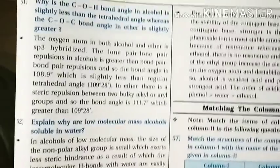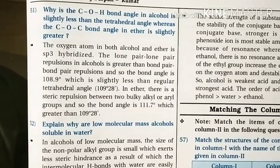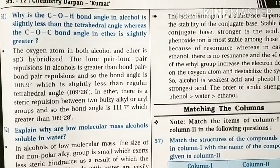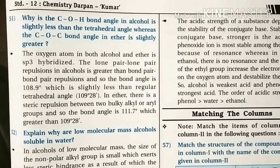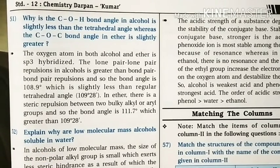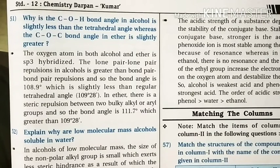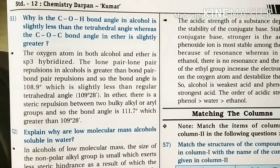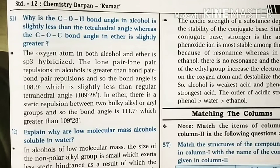Question 51: Why is the COH bond angle in alcohol slightly less than the tetrahedral angle, while the COC bond angle in ether is slightly greater? Oxygen in both alcohol and ether is sp3 hybridized. Due to greater lone pair–lone pair repulsion (VSEPR concept), the COH bond angle in alcohol is slightly less than 109°28'. In ether, the COC bond angle is slightly greater than the tetrahedral angle due to repulsion between the two bulky R groups.